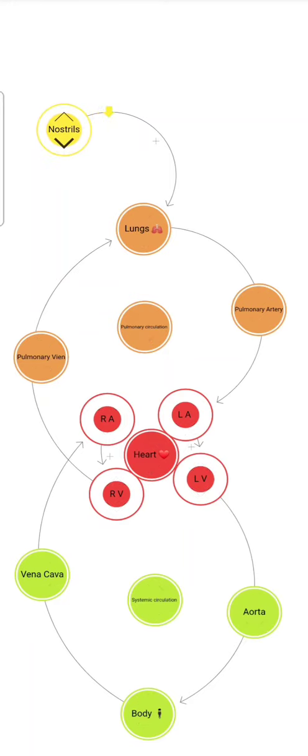That arrow is oxygen. Then it goes to the lung and mixes with blood. And now our blood is oxygenated.